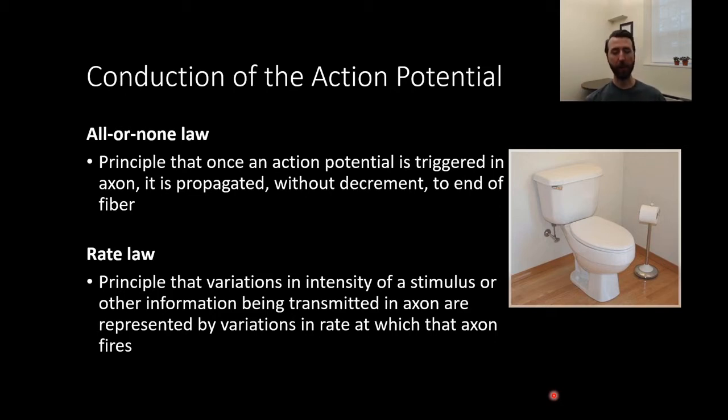The rate law is the principle that variations in intensity of a stimulus or other information being transmitted in an axon are represented by variations in the rate at which the axon fires. So if you remember, I said earlier that you can't have a big or a small action potential. They're all the same size. But at the same time, you can perceive how bright or dim a light is. So the intensity of that stimulus is represented in your nervous system by how fast the neurons that perceive it are firing, not by how hard they're firing.